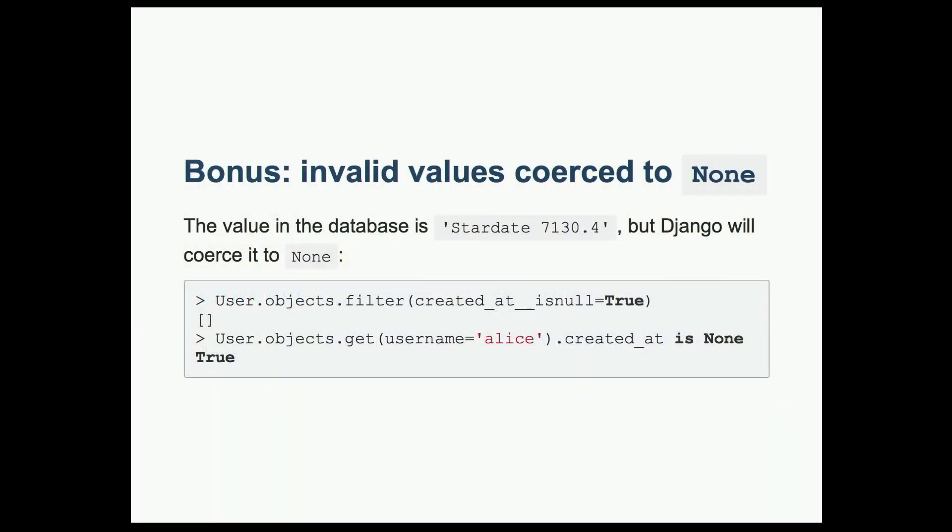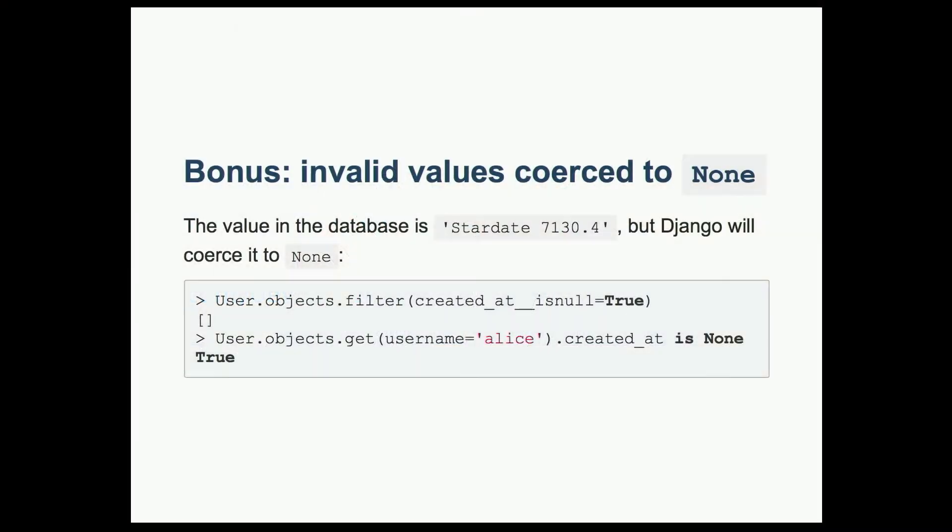There's actually a bonus from having this kind of failing validation, or skipped validation. That invalid date time that we saved, when you load an instance back from the database, that's going to be none, but it's not none in the database. So you get real puzzles like this. This was actually at the root of a bug that took me several days to track down.